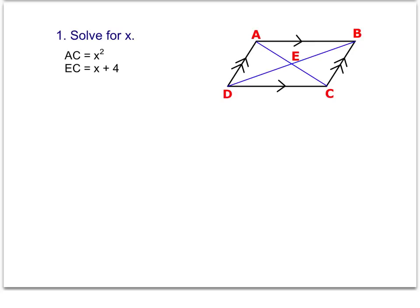If I know that AC, this whole piece right here, is x squared, and I know that EC, this segment right here, is x plus 4.